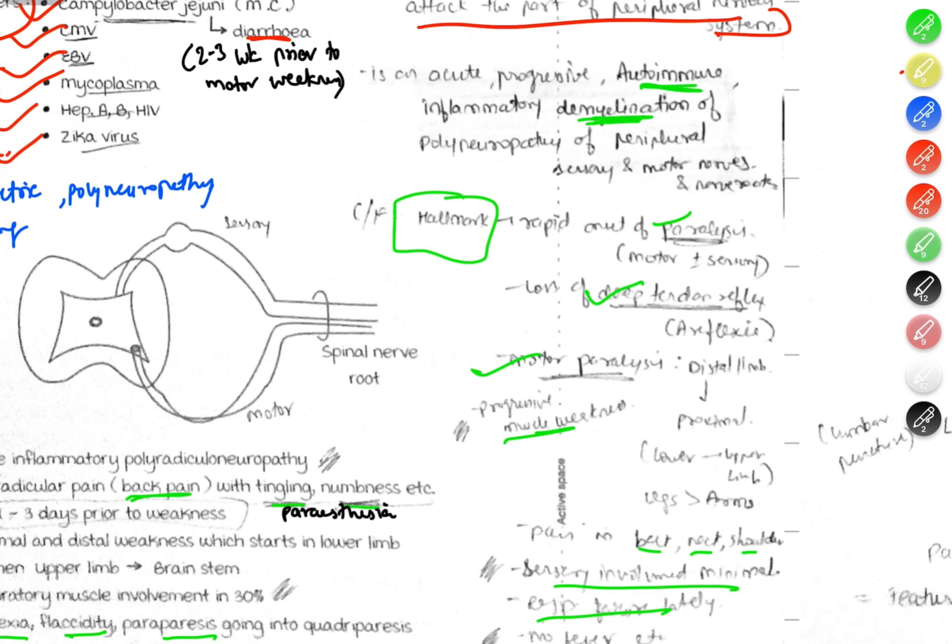The hallmark features are rapid onset of paralysis, first affecting the motor part, then loss of deep tendon reflexes, motor paralysis initially in distal limbs then progressing, and progressive muscle weakness. These are the main clinical features.